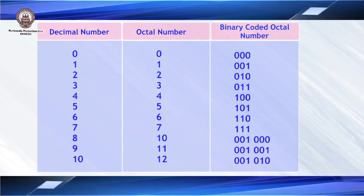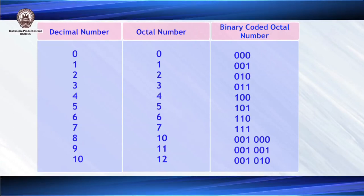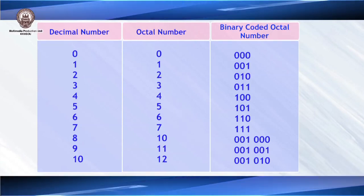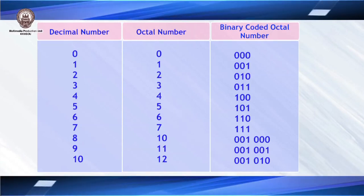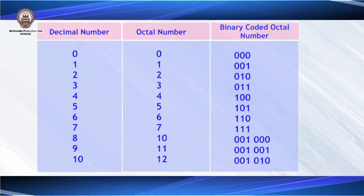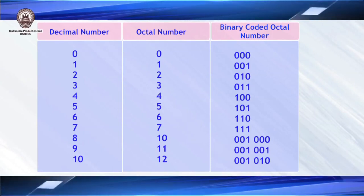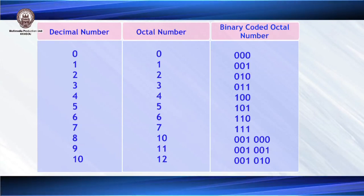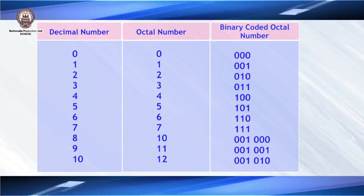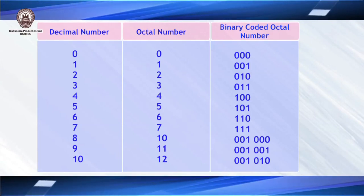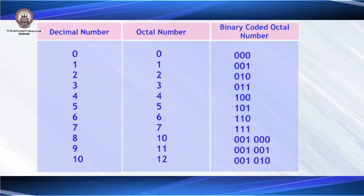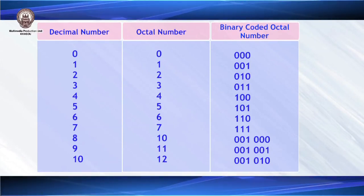For the octal number 10, the digit 1 is represented separately by 3 binary bits as 001, and 0 is represented as 000. For the octal number 11, it is represented as 001 001. Likewise, this representation holds true for all other octal numbers.